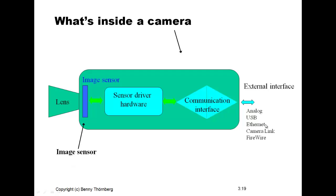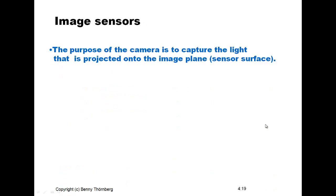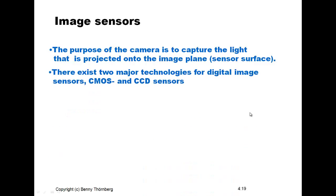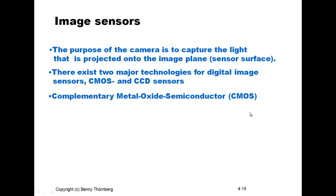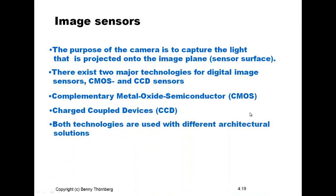We will focus today on the discussion of image sensors. The purpose of the camera is to capture light projected onto the image plane, the sensor surface. There exist two major technologies for these image sensors: CMOS and CCD sensors. CMOS means complementary metal oxide semiconductor; CCD means charge coupled devices. Both technologies are used within different architectural solutions and different ways of arranging the pixels and readout mechanism on the detector surface.